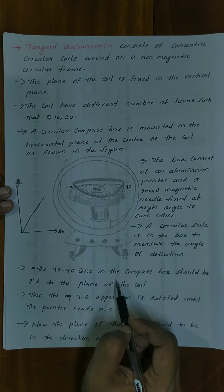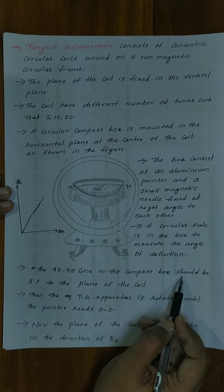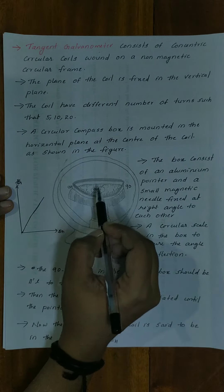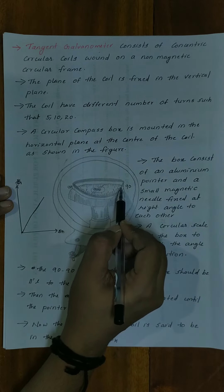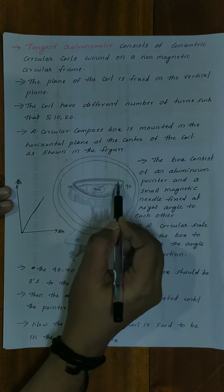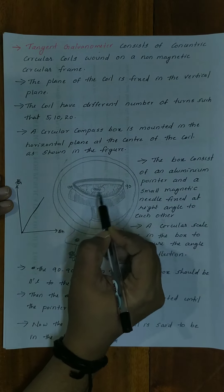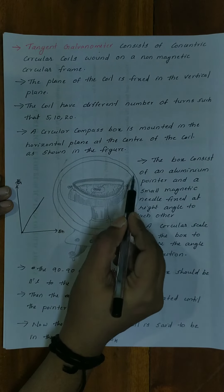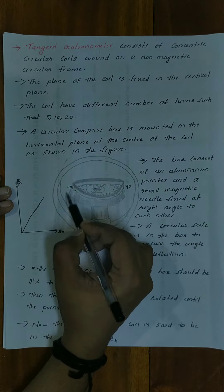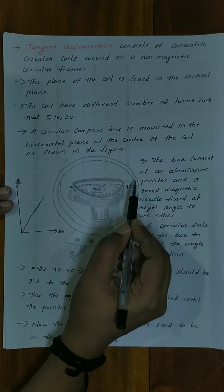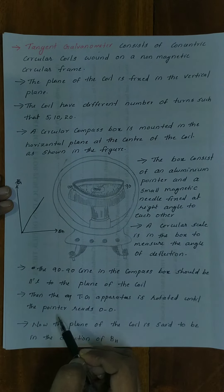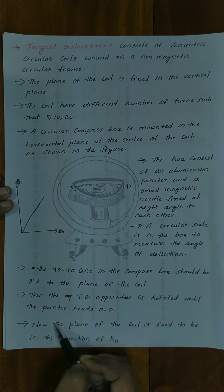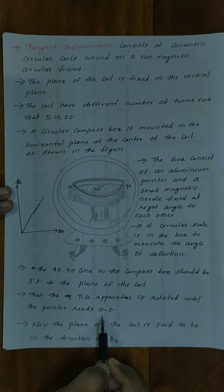The 90-90 line in the compass box should be parallel to the plane of the coil. The TG apparatus is rotated until the pointer reads 00.